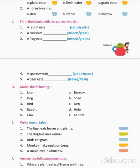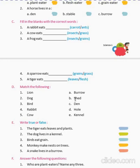Match the following. Lion lives in a den. Dog lives in a kennel. Bird lives in a nest. Rabbit lives in a boro. Cow lives in a shed.